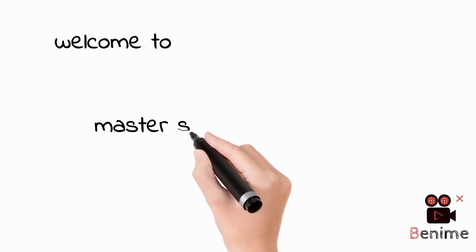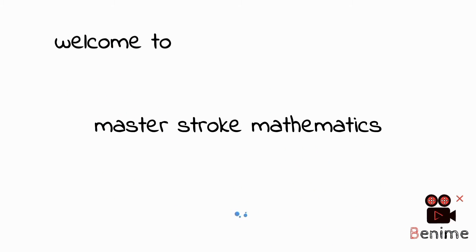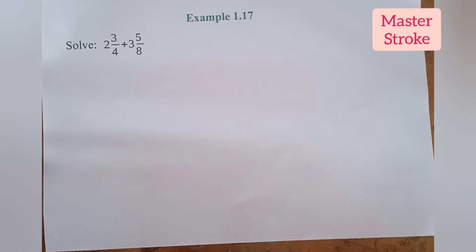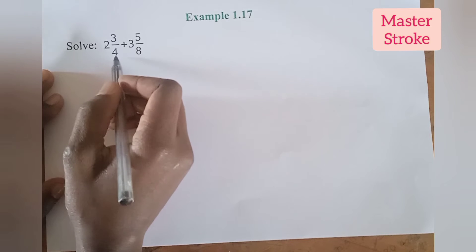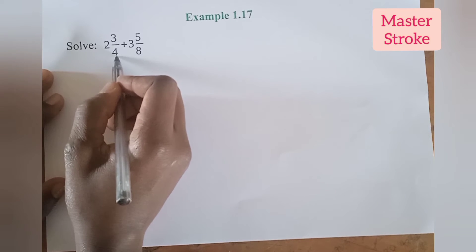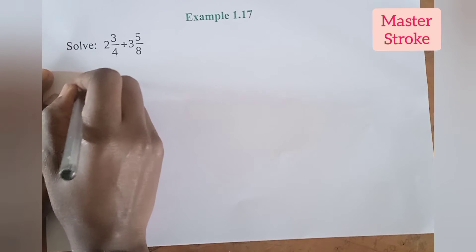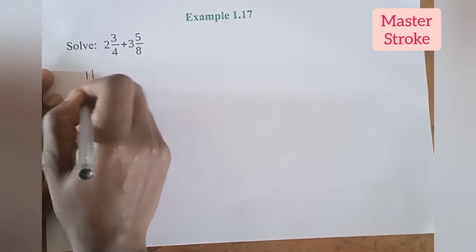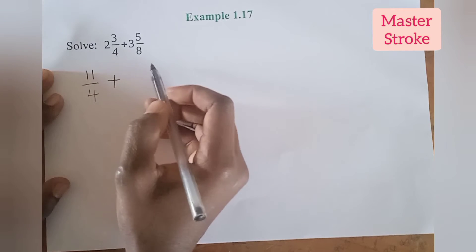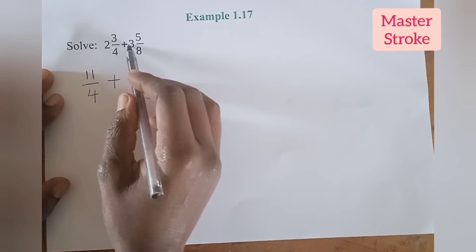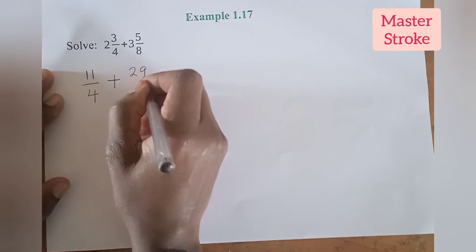Welcome to Masterstroke Mathematics. Solve 2 and 3 quarters plus 3 and 5 eighths. The first thing is to convert the mixed numbers to improper fractions. 2 and 3 quarters becomes 11 over 4, plus 3 and 5 over 8.